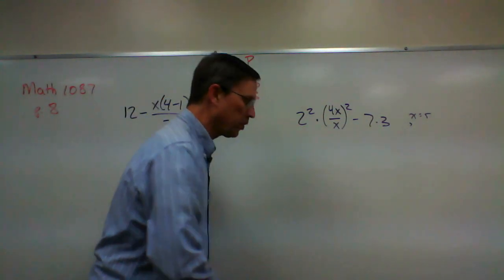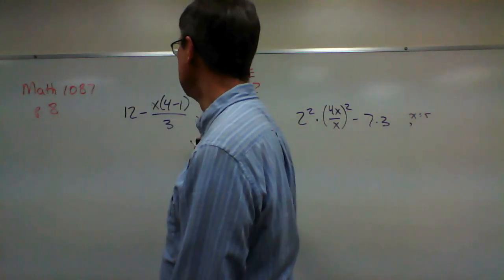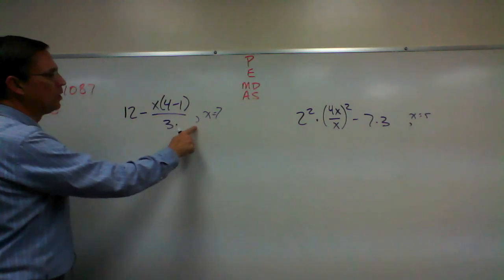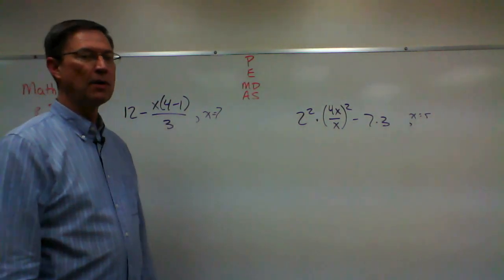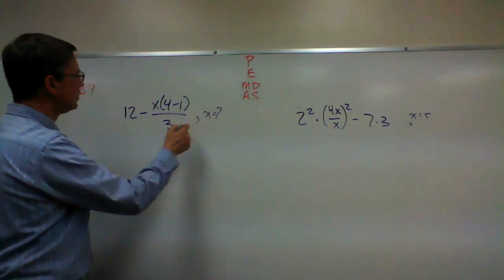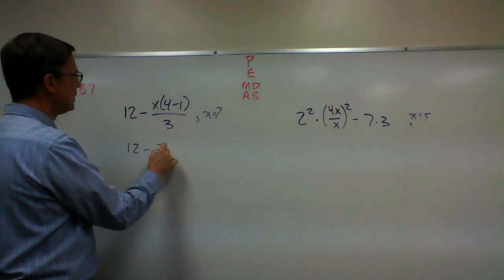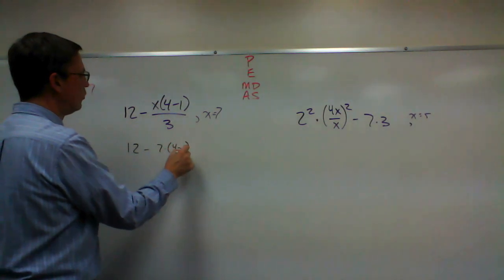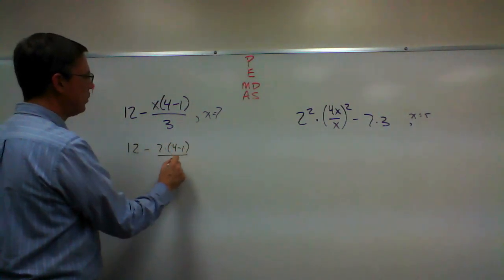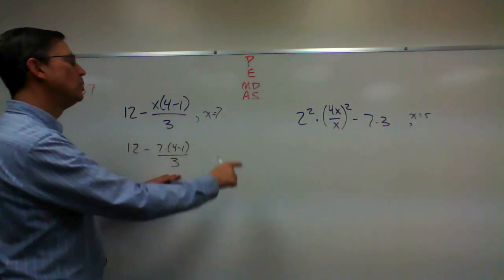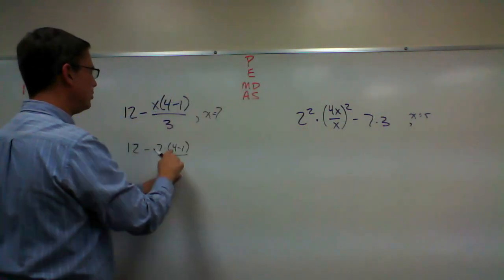So let's walk through this example right here. For this one we are told that x equals 7. So we're going to substitute that in place of x here, so that would give me 12 minus 7 times 4 minus 1, and that part of it is being divided by 3. All right, so we do have parentheses so I do that first.